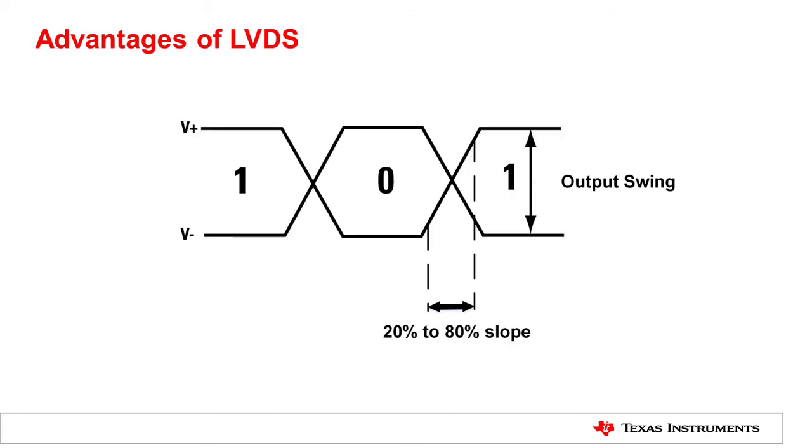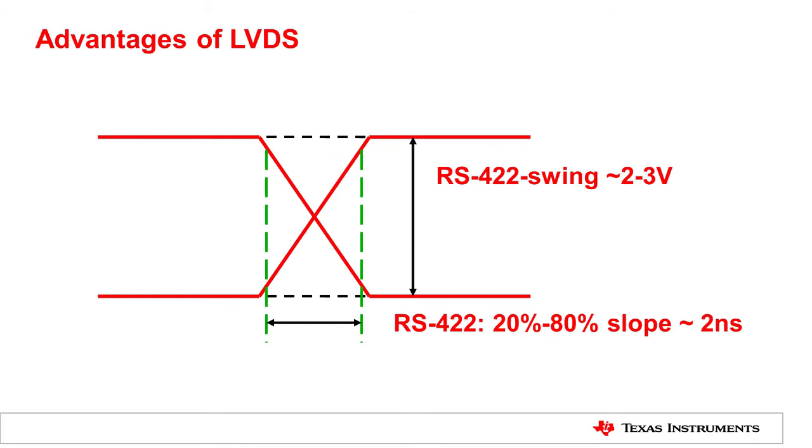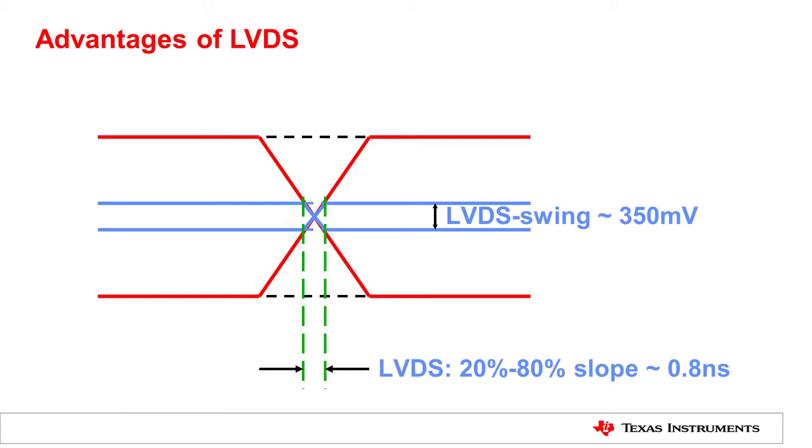The reason LVDS can achieve this data rate is because of its low output voltage swing, which results in a fast switching slope. Let's compare LVDS to RS-422, another standard differential signaling protocol. RS-422 has a voltage swing of 2 volts, but LVDS only has 350 millivolt voltage swing. With a lower voltage swing, it only takes about 0.8 nanoseconds for LVDS to switch from low to high or high to low.